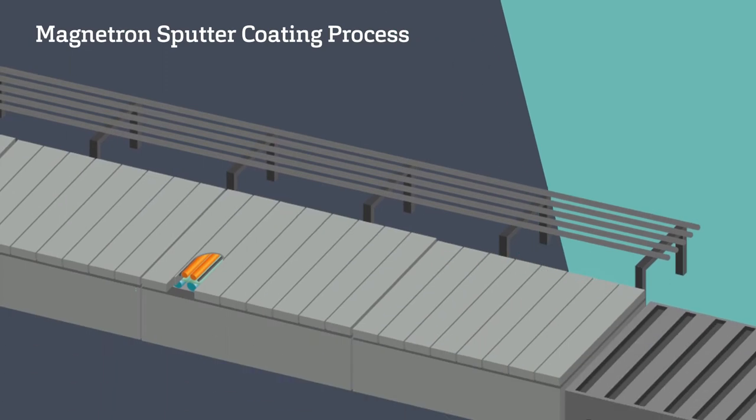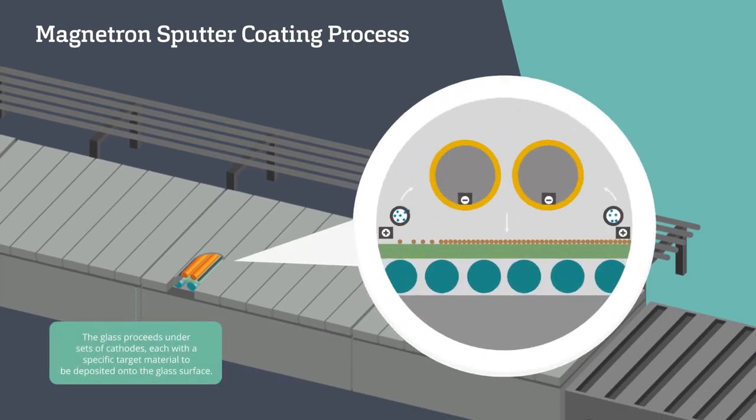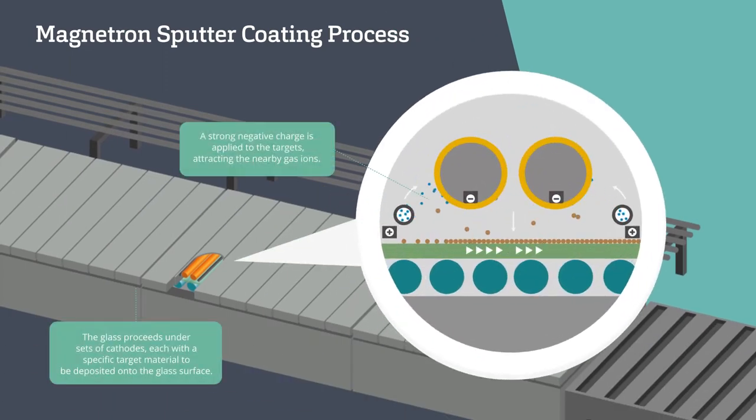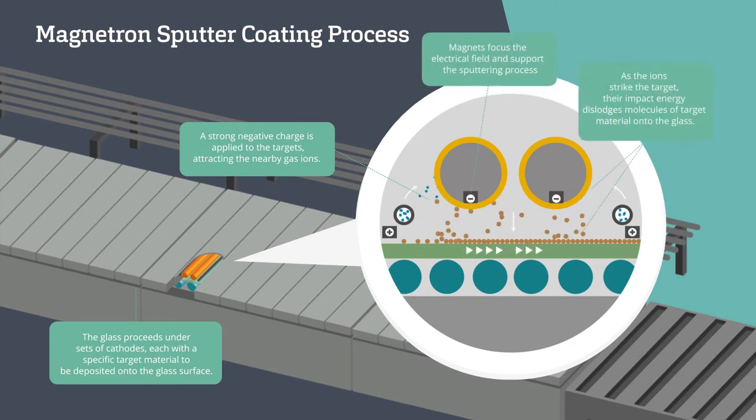A strong negative charge is applied to the targets, attracting the nearby gas ions. Magnets focus the electrical field and support the sputtering process. As the ions strike the target, their impact energy dislodges atoms or molecules of target material onto the glass.